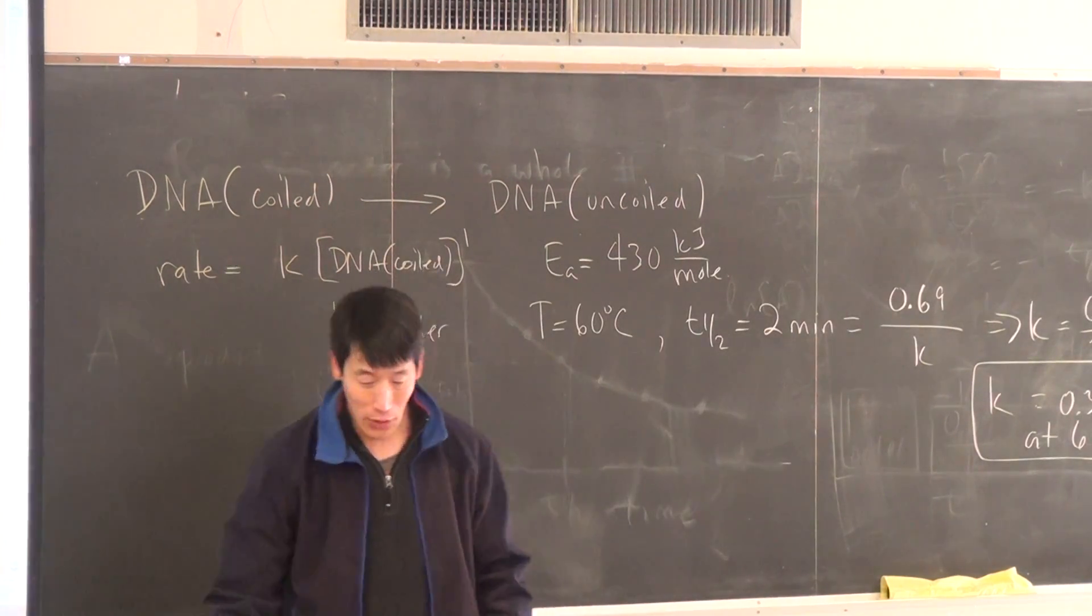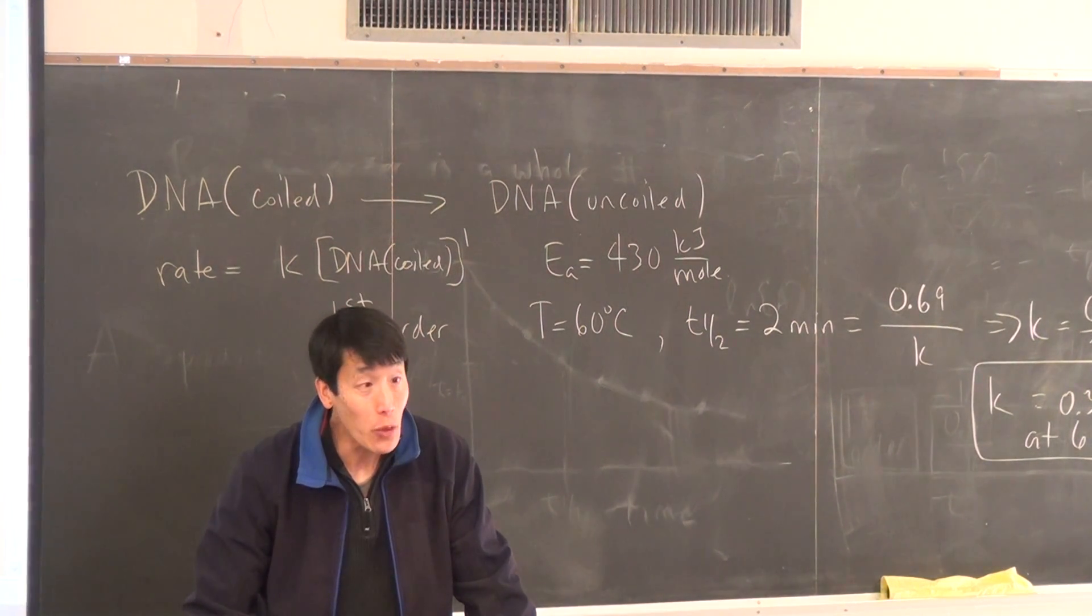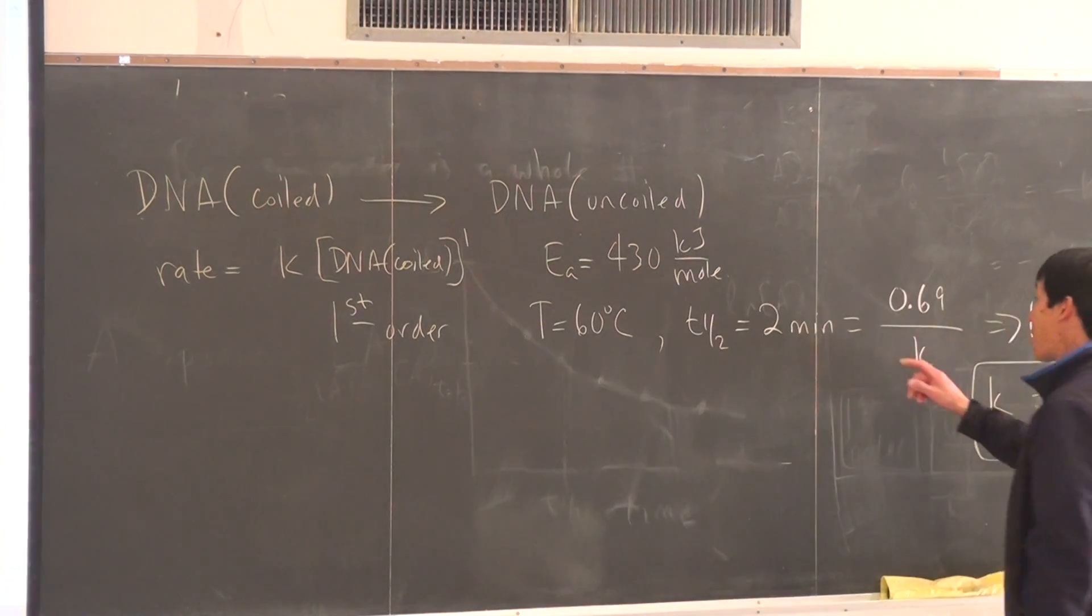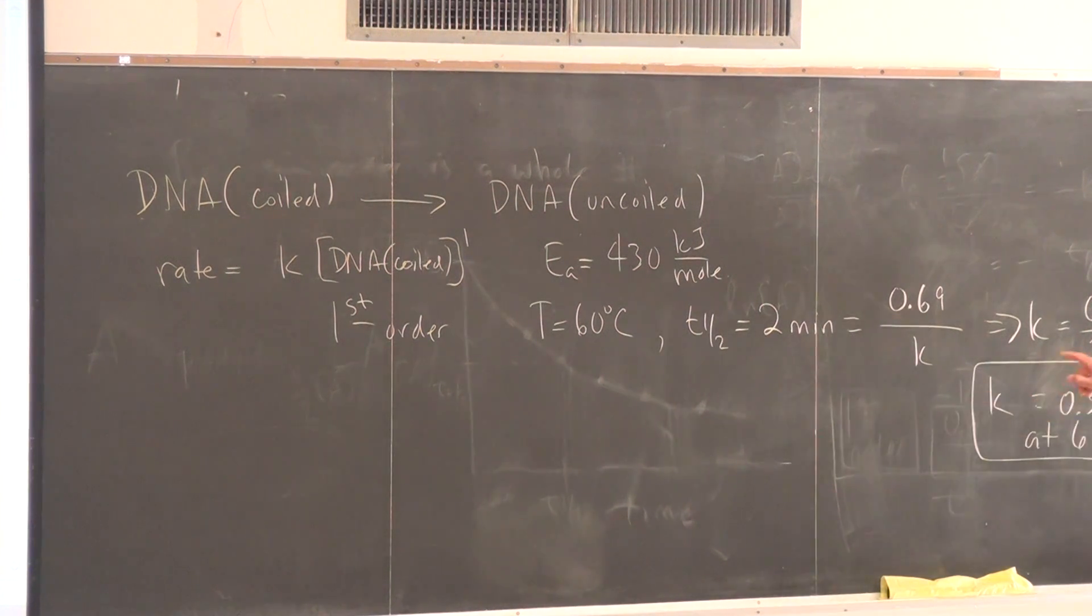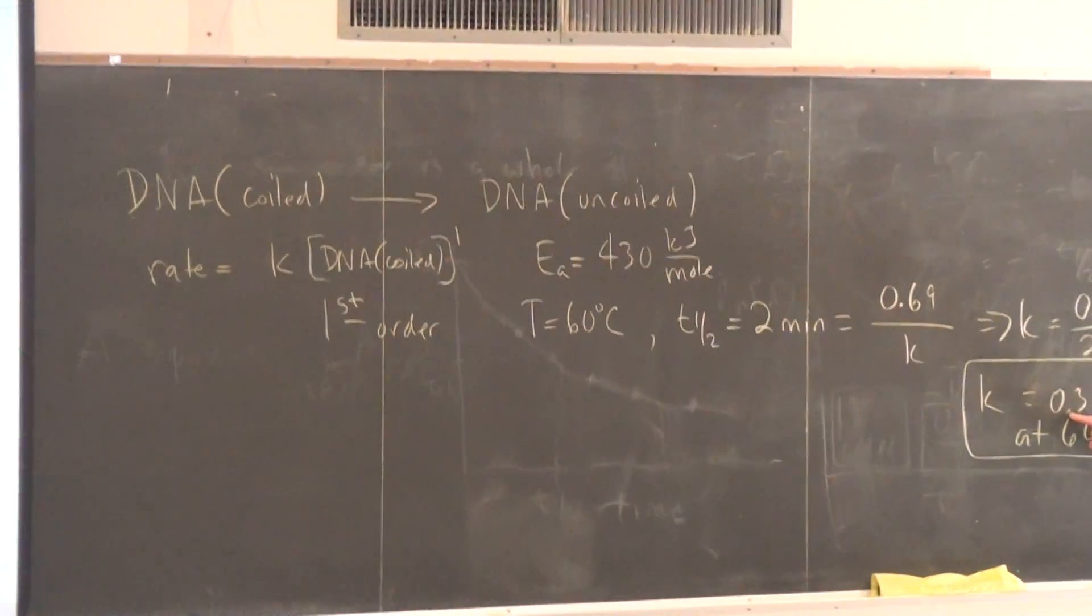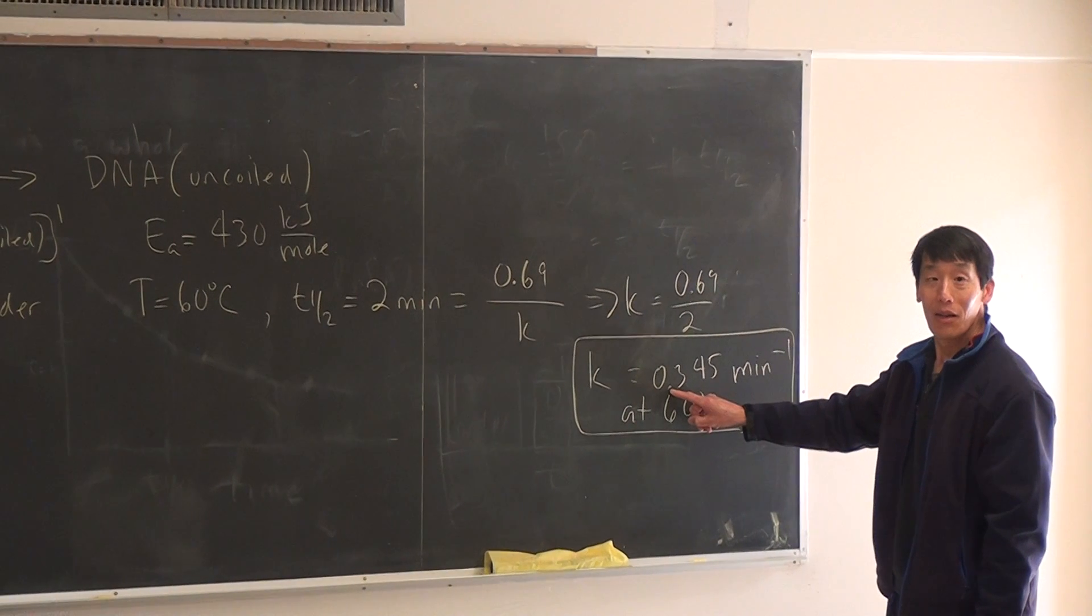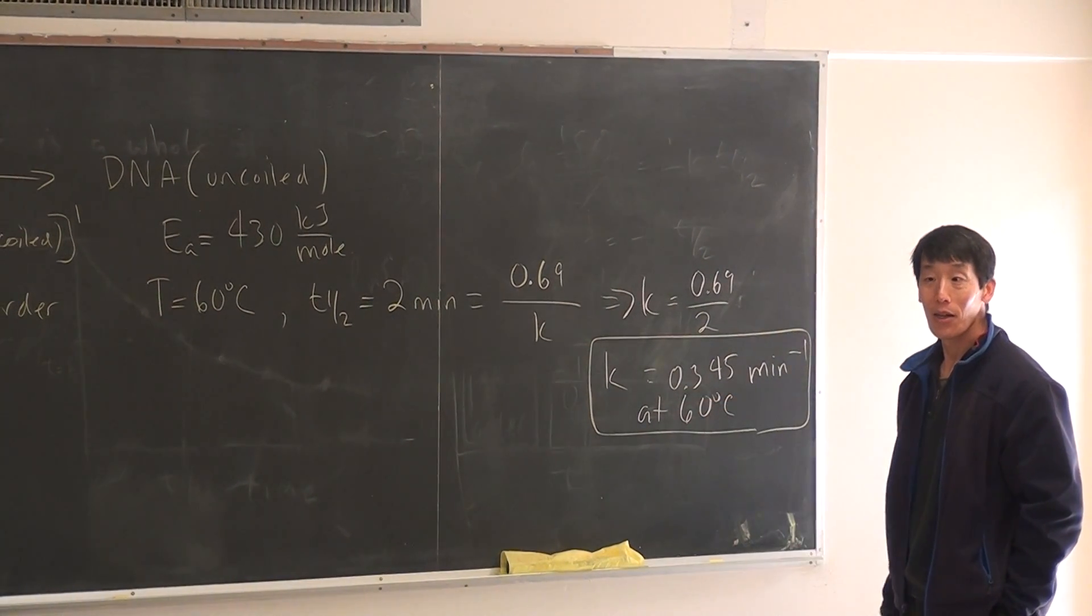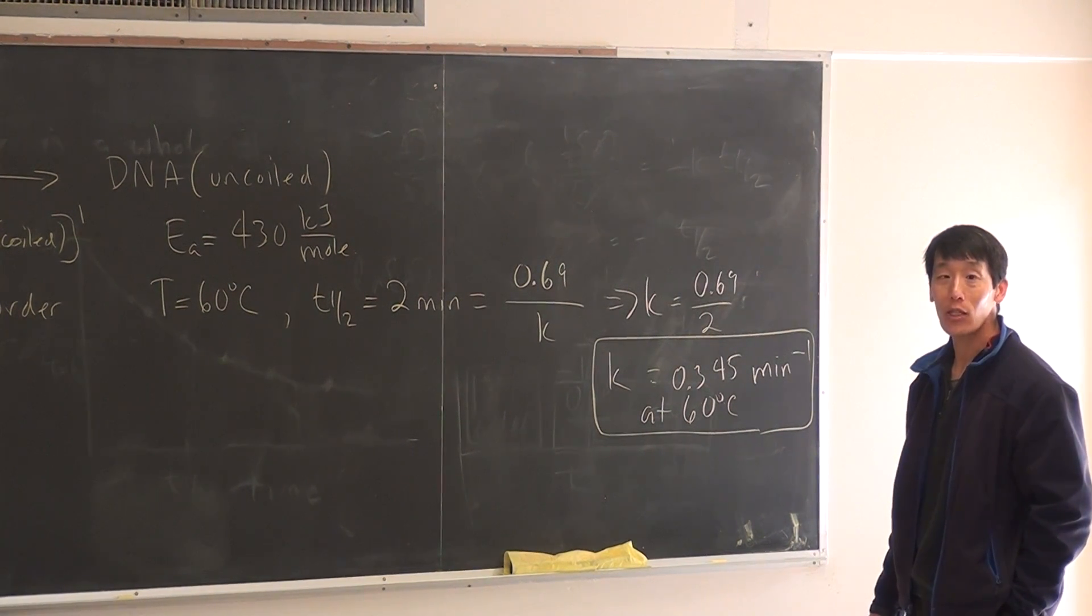Now it says calculate the half-life at normal body temperature 37 degrees Celsius. So, we know what the half-life at 60 degrees is, so we can calculate the rate constant K. So, this is the rate constant K at 60 degrees. How does K change with temperature?